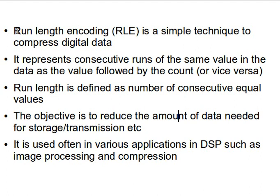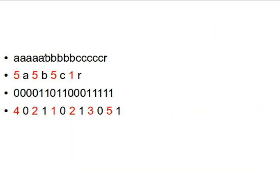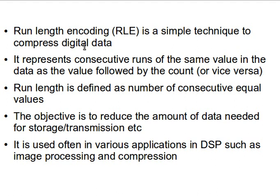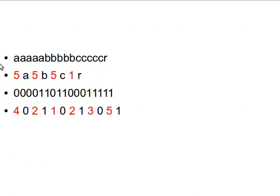Let's have an example and see how it actually works. Imagine we have a string of values like: A A A A A B B B B B C C C R. Run Length Encoding works by scanning through the data one value at a time and checking whether we have consecutive values — runs of the same value in the data.